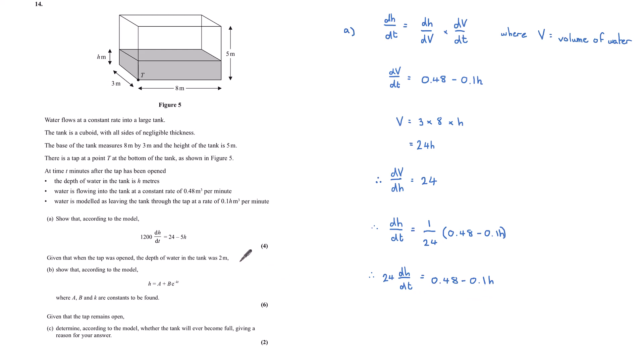If I just look at getting rid of the decimal places here. If I look at this 0.1h, I want 5h. If we multiply the whole thing by 50, so every term multiplied by 50, we get 1,200 dh by dt is 24 minus 5h, which is what we wanted to show.